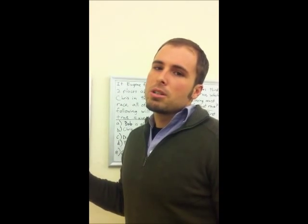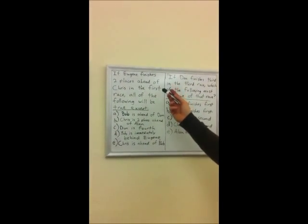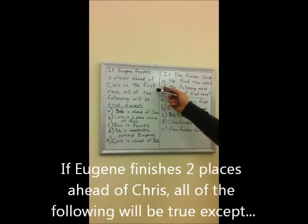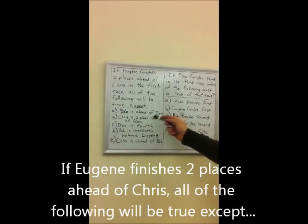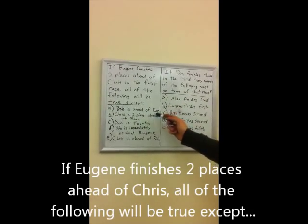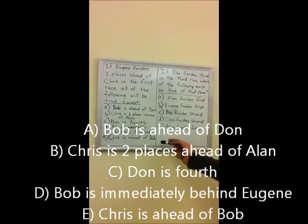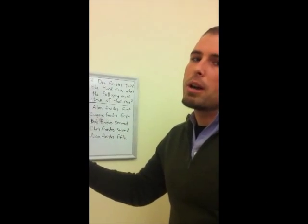What comes next are a series of questions pertaining to this. The first question we're going to look at is this one: If Eugene finishes two places ahead of Chris in the first race, all of the following will be true except: Bob is ahead of Don, Chris is two places ahead of Alan, Don is fourth, Bob is immediately behind Eugene, or Chris is ahead of Bob. Let's take a look at the board over here and we'll go ahead and try diagramming this problem.